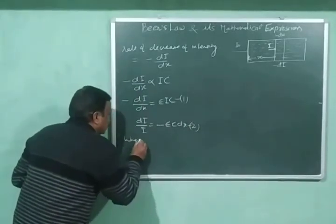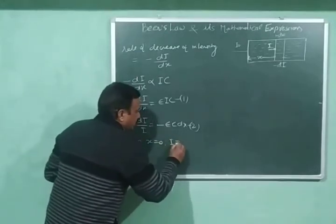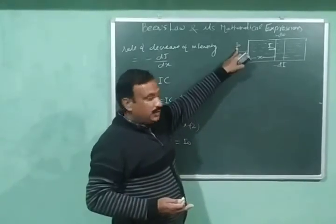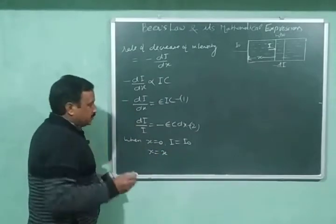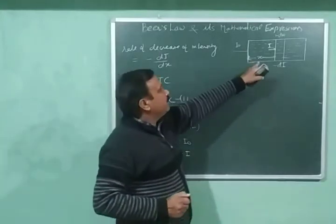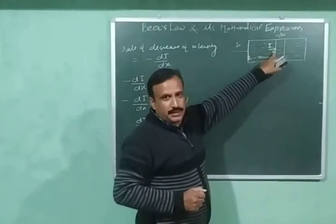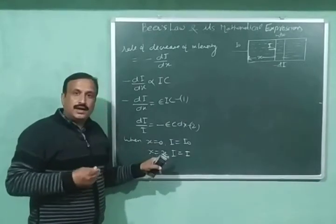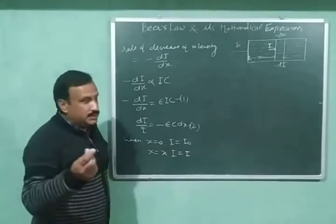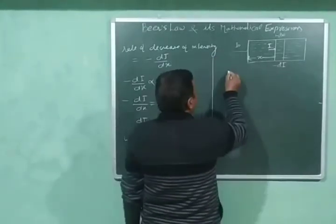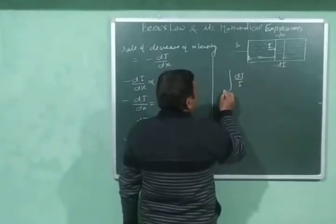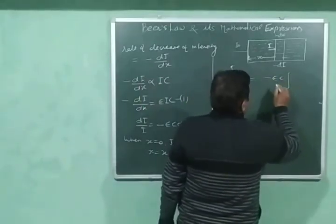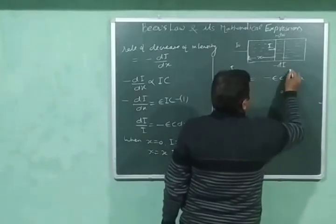We know that when x = 0, the intensity is equal to I₀ — that is, before entering the solution. And when x = x, the intensity is equal to I, because after travelling distance x through the solution, the intensity is reduced to value I. We will now integrate equation number 2 between these limits: thickness from 0 to x, and intensity from I₀ to I. Integration of dI/I between limits I₀ to I equals −εC times integration of dx between limits 0 to x.